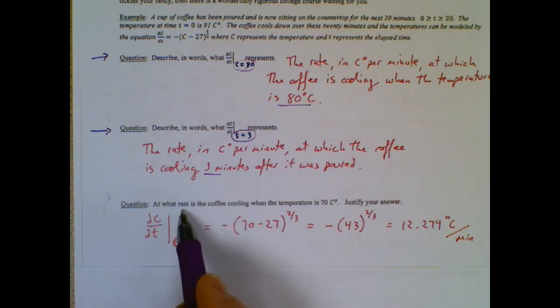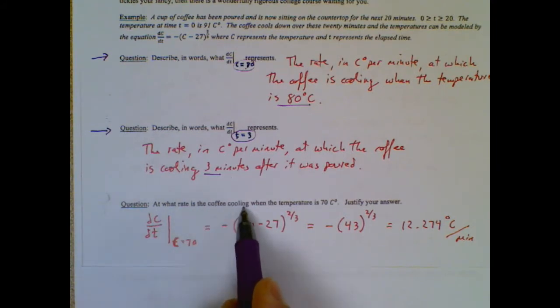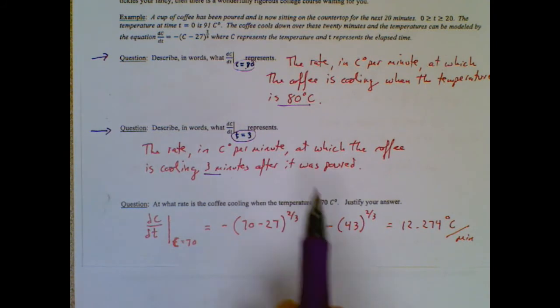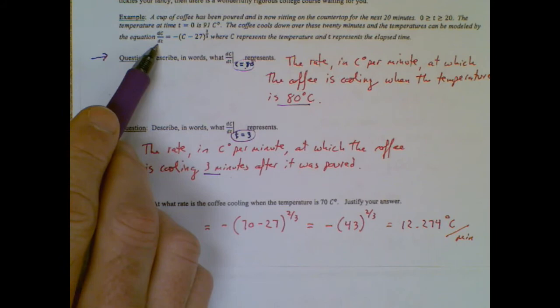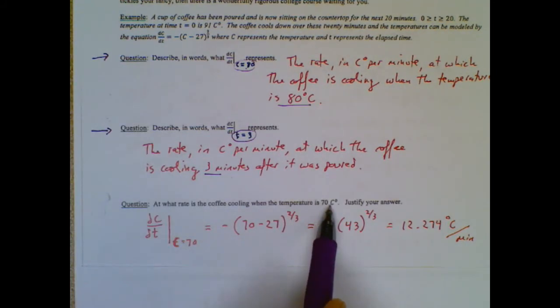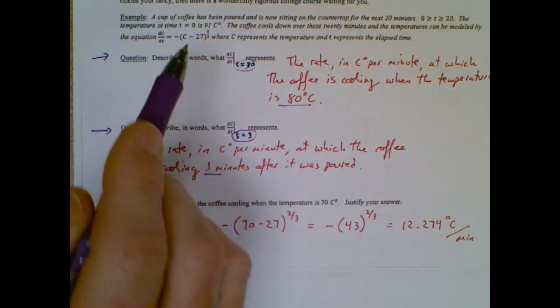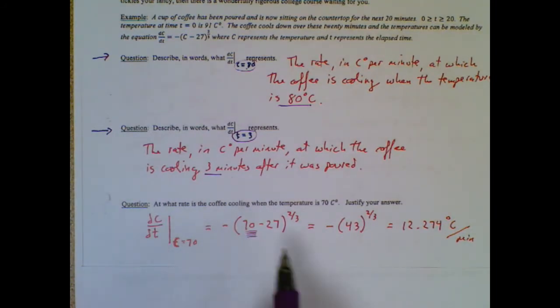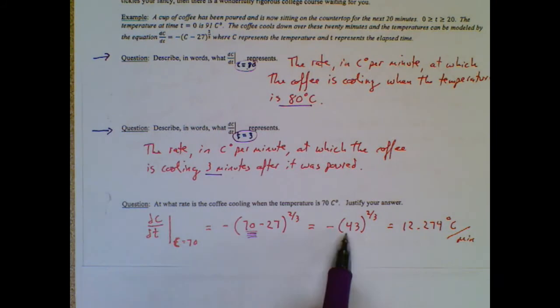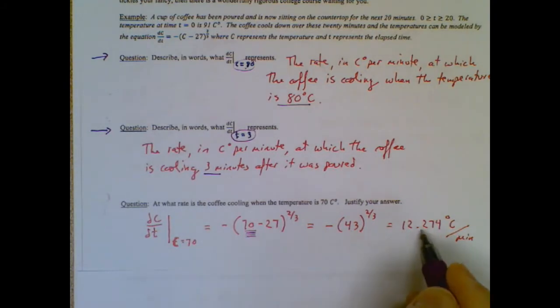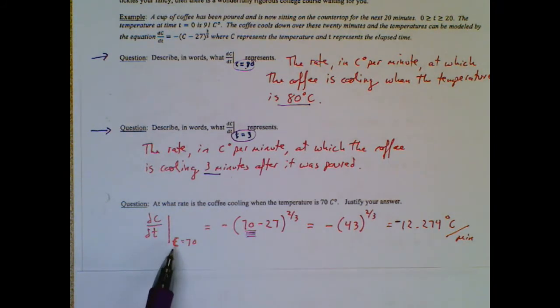This next question wants to know the exact rate at which the coffee is cooling when the temperature is 70 degrees. Well, since dc/dt gives us a rate of cooling and we're given a 70 for our c, we can literally just plug in a 70 where there used to be a c and we end up with our answer. Basically the coffee is cooling at 12.274 degrees Celsius per minute. You could put a negative in front of there or you could use the words that say it is cooling at this rate. But it was pretty easy because if they gave us a c equals 70, I can plug a c equals 70 in there.